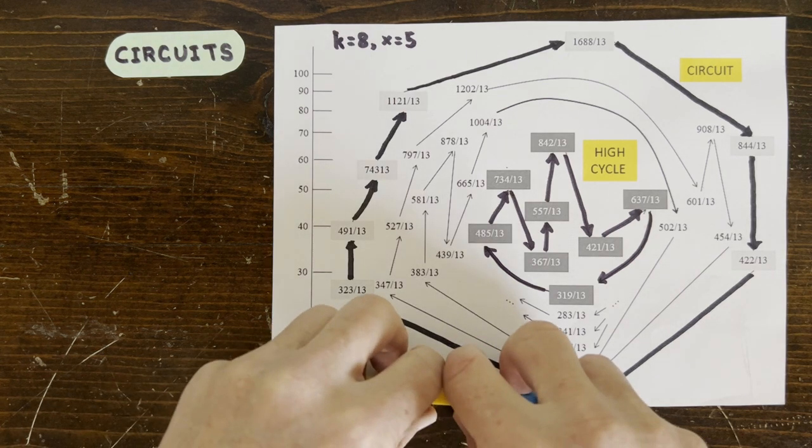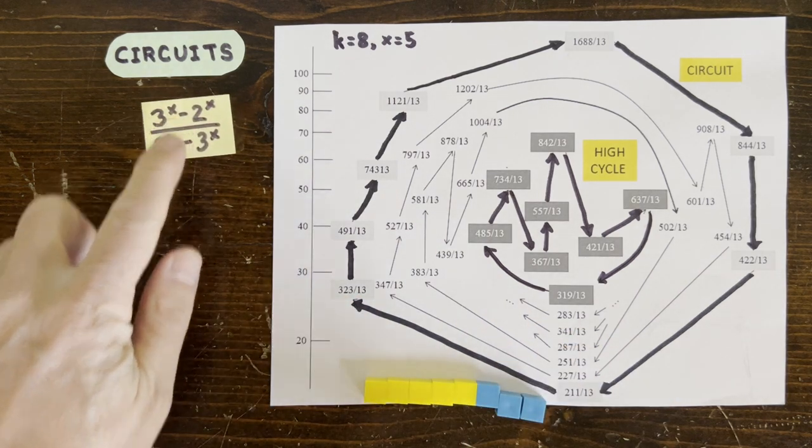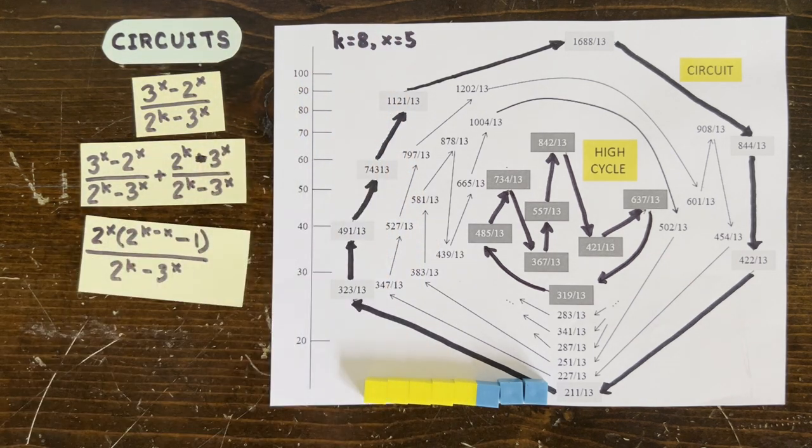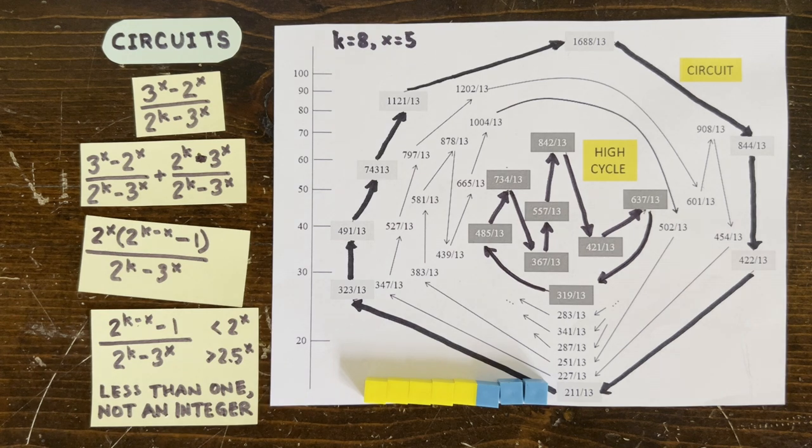The bottom of the circuit always takes this form, and we employed some heavy artillery to show why this can't ever be an integer, no matter how big k and x get.